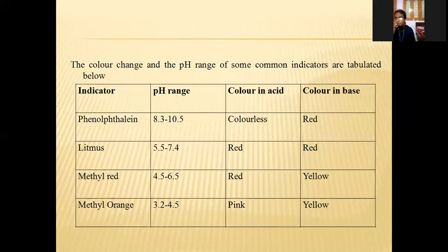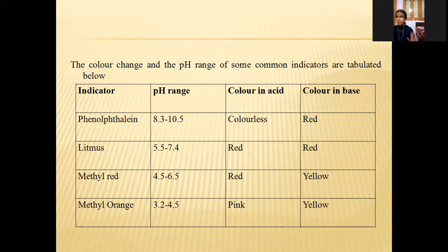Several indicators are used for acid-base titrations. I explained this table in a previous topic on acid-base titrations. The indicators are: phenolphthalein, litmus, methyl red, and methyl orange. The pH range of phenolphthalein is 8.3 to 10.5.